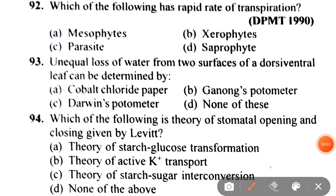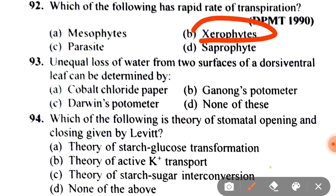Next: which of the following has the rapid rate of transpiration? A. Mesophytes, B. Xerophytes, C. Parasites, D. Saprophytes. Xerophytes have modifications to reduce the rate of transpiration, so the answer is A — mesophytes.